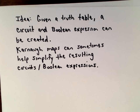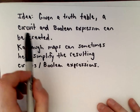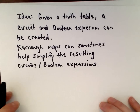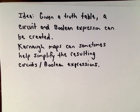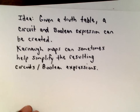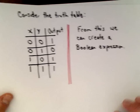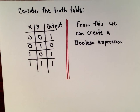In my understanding, truth tables, circuits, and boolean expressions are all equivalent — it's kind of like converting from decimals to fractions. They convey the same information just in slightly different forms. So let's start with a truth table, create a boolean expression from it, and then start talking about Karnaugh maps and how they work.